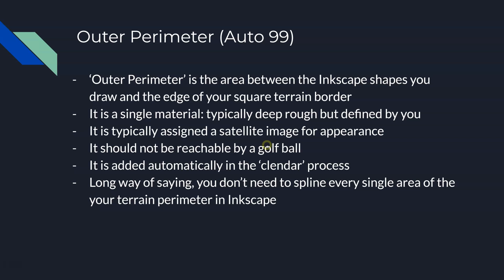You should not be reachable by a golf ball. The general rule of thumb is you should not be able to reach it with a golf ball. It's not a big deal if it does, but if you wonder where your outer perimeter should start, that's the area that shouldn't be reachable by a golf ball. That area is added automatically later on in the calendar process. So when you submit your SVG — your Inkscape file — to calendar, it will say: what do you want for your outer perimeter, your Auto 99? And you can say I want it to be deep rough, and boom, there it is. It's done. It's added automatically for you.